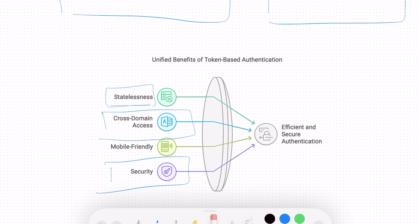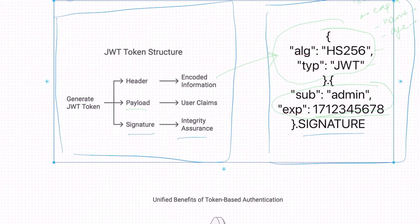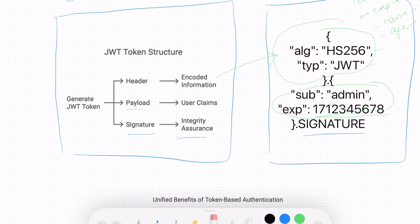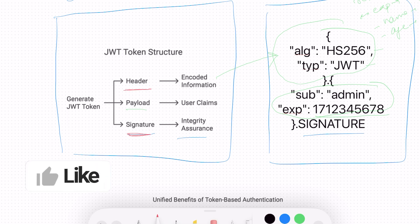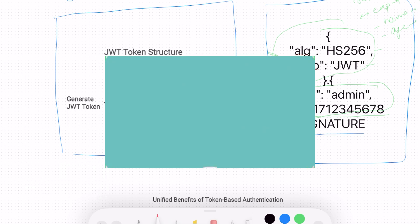Finally, there is the security advantage. The header and signature parts of the JWT hold encoding information and verify whether the token was tampered with during transit. Tokens can be signed and encrypted, providing a secure way to transmit information and guaranteeing tamper detection once a token is received. That covers token-based authentication. If you have any questions, please comment and I'll reply as soon as possible. Hit the like button if you enjoyed this video and subscribe to my channel.